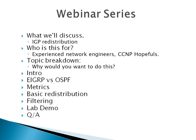Here's what we're discussing: IGP redistribution. This is one of the key topics on the CCNP exam, specifically the Route exam, as well as in the real world. This is for people studying for their CCNP Route exam, people who want information on redistribution, and experienced network engineers who might use this on the job. It's not going to be at a super detailed CCIE level — this will cover the basics and a few of the more advanced topics.